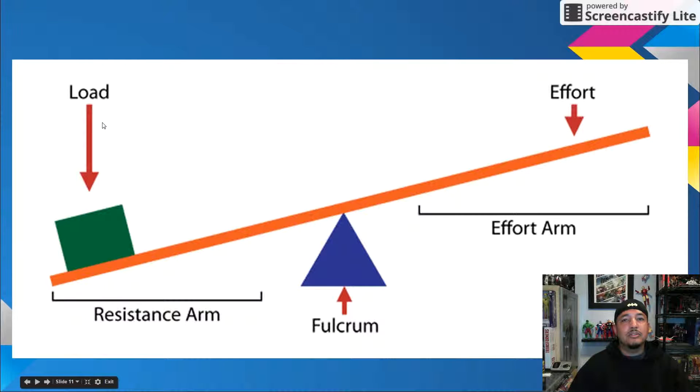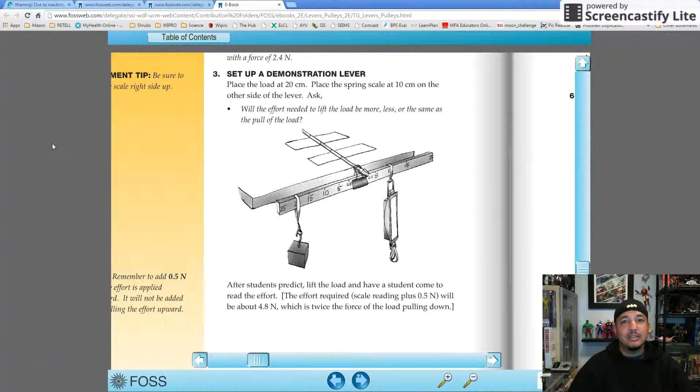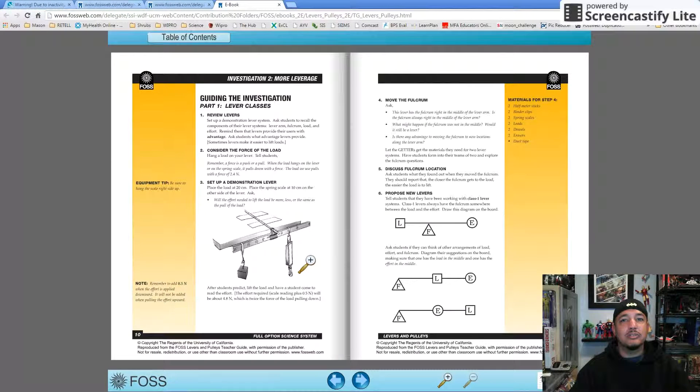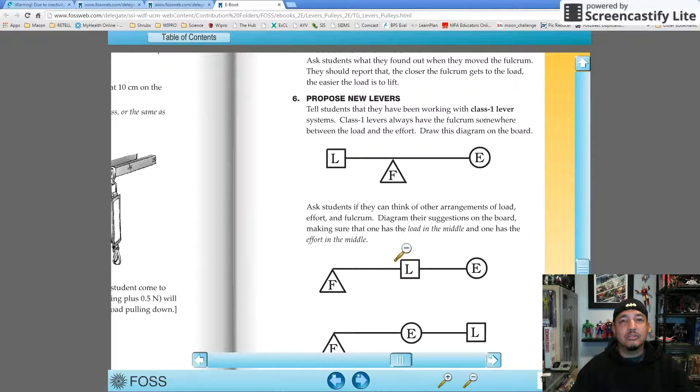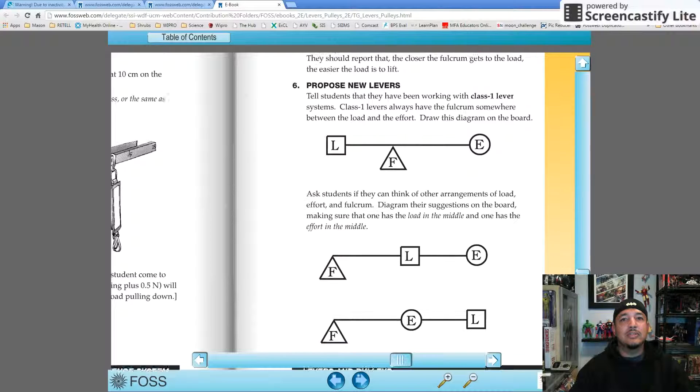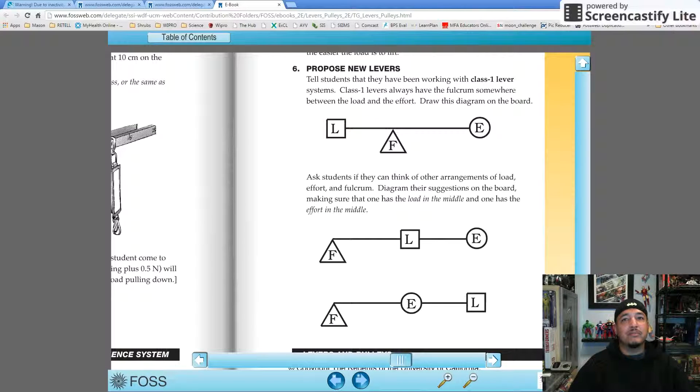Students will then propose new lever arrangements, guide the discussion, and ensure that students suggest placing the load or the effort in the middle or between the other two. As students suggest different arrangements, draw diagrams of them on the board. Follow the samples on page 11, but just remember triangle for fulcrum, square for load, and circle for effort.